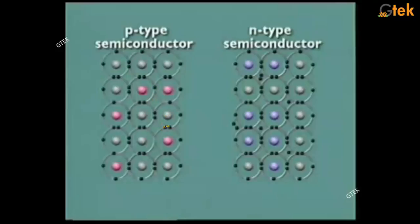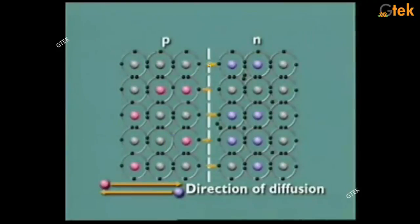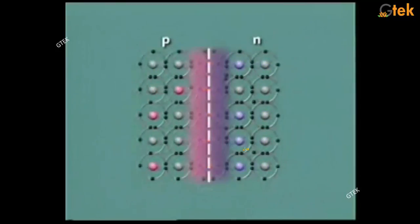In p-type, there is a deficiency of electrons — you are able to see there is a hole here. In n-type, you are able to see there is an excess of electrons. Now, if we merge the p-type and n-type, the direction of current will flow such that holes from the p-type will start moving and electrons from the n-type will start moving toward it.